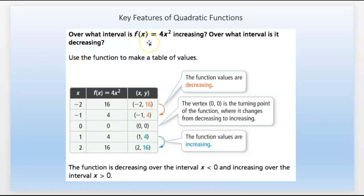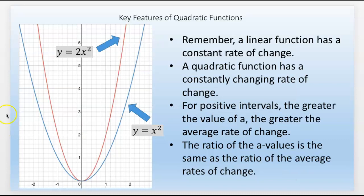Over what interval is f of x equals 4x squared increasing, and what is it decreasing? You can use a table of values and just look at the values of y. As x increases, what is y doing? In this case, y is decreasing from 16 to 4 to 0. The vertex is at 0, 0. That's the turning point where it changes from decreasing to increasing, because now we go from 0 to 4 to 16. Here is where it's increasing.